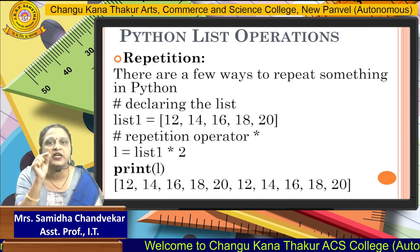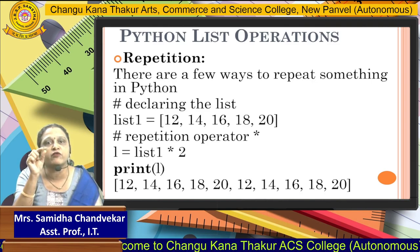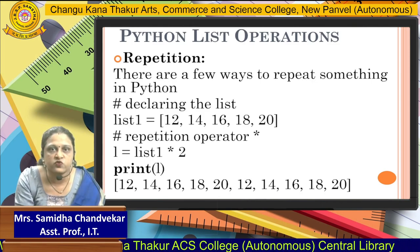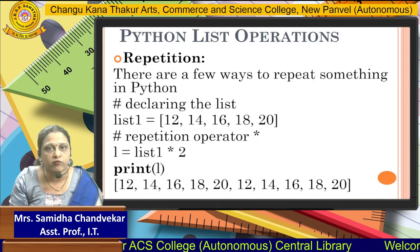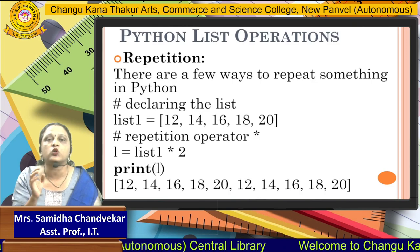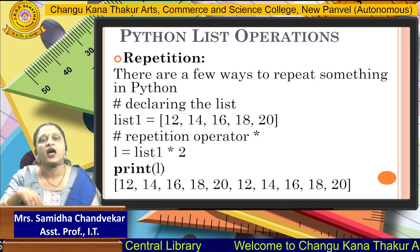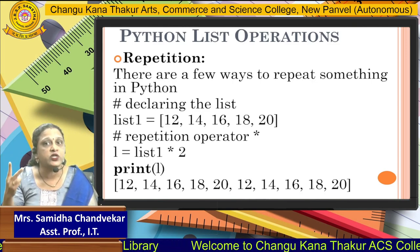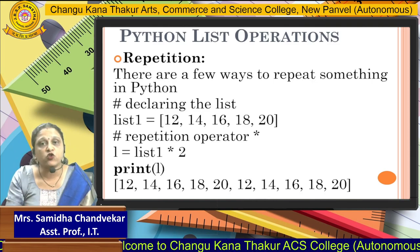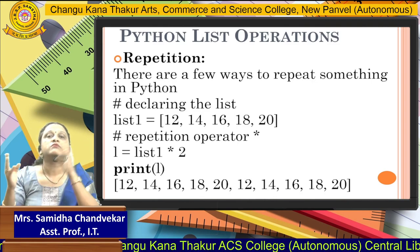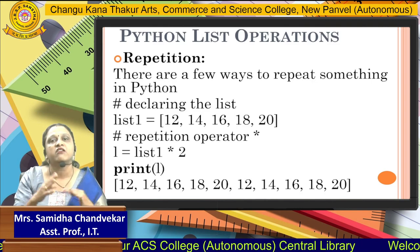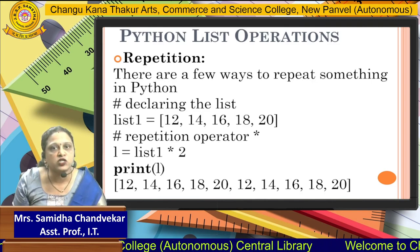That means we write: L = list1 * 2, then print L. Here list1 is our original list. L is the new list made in a repeated format. So the L list becomes [12, 14, 16, 18, 20, 12, 14, 16, 18, 20] — it repeats again because we multiplied by 2. If you multiply by 3, it repeats 3 times; if by 4, it repeats 4 times. So this is the repetition operator.